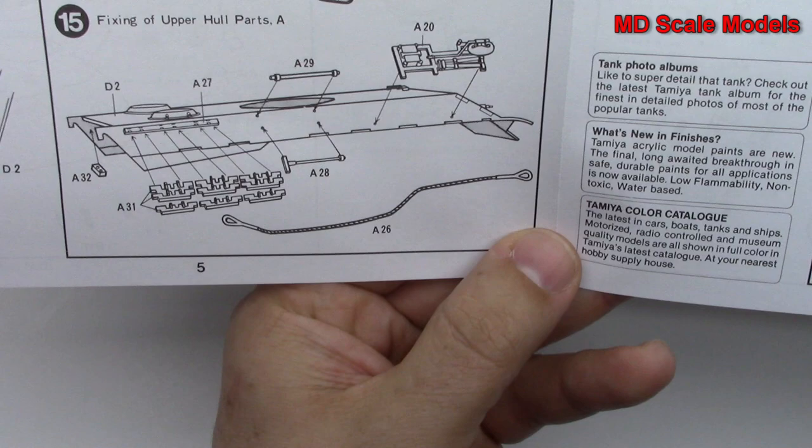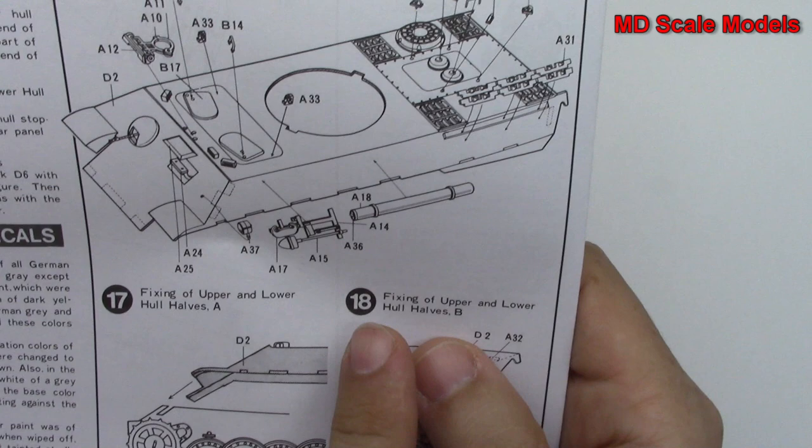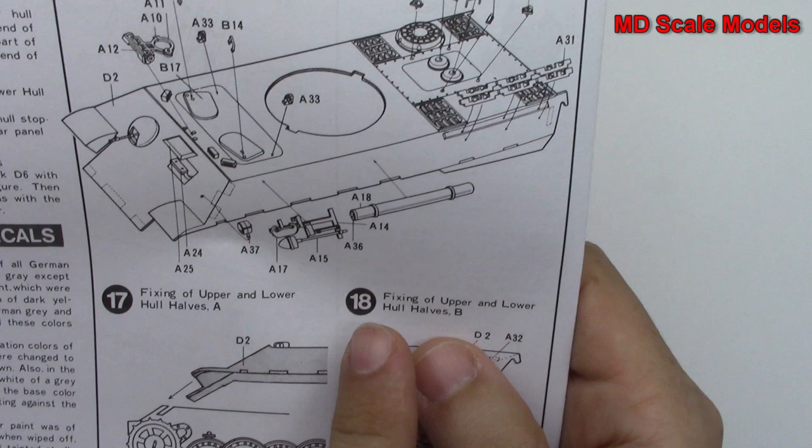And then that all gets mounted on the top of the main hull. And we put those parts together, put our tracks together, and then that's the painting and detail guide. And so overall, this is another really good quality tank model from Tamiya.